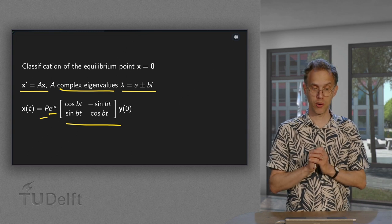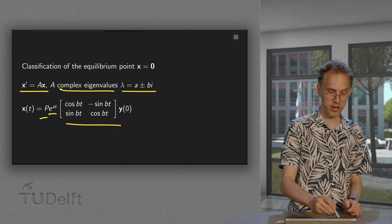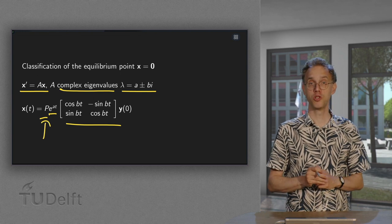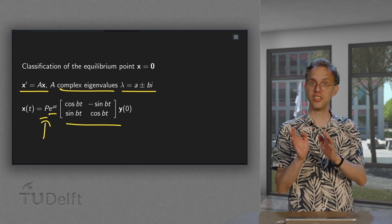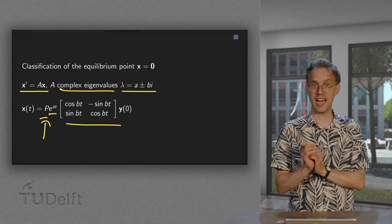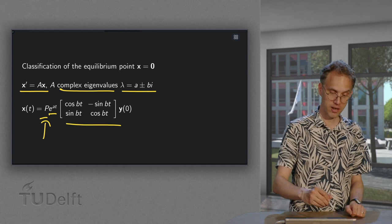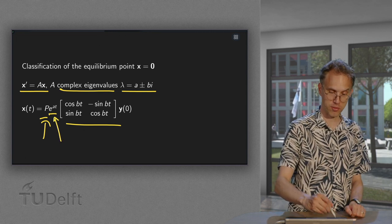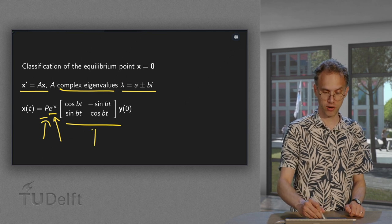So what is going to happen? Well this P over here doesn't do too much, it just changes your basis axis. The main role is played by this e^(at) and by this rotation matrix.